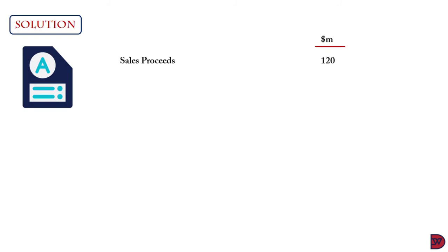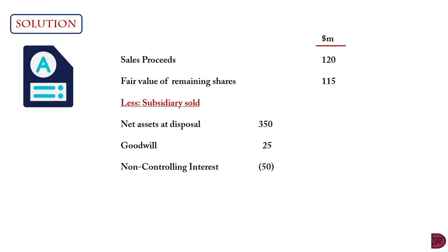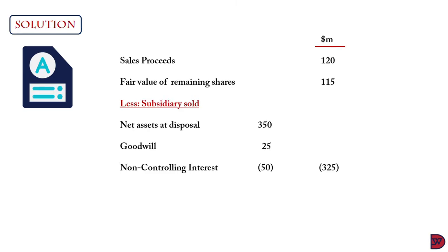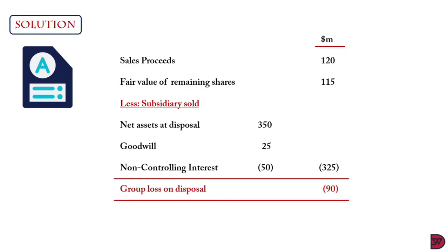For the solution, we start with the sales proceeds of the 50% stake sold: 120 million dollars. The fair value of the remaining 30% is 150 million dollars. We then less the value of the subsidiary: net assets at disposal 350 million dollars, plus goodwill of 25 million dollars, less non-controlling interest at date of disposal of 50 million dollars, giving a subsidiary value of 325 million dollars. This is more than the addition of the sales proceeds and the value of the remaining shares, leading to a group loss on disposal of 90 million dollars.